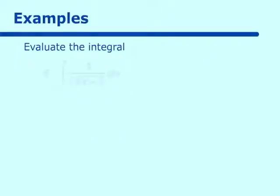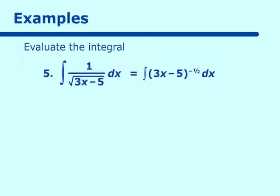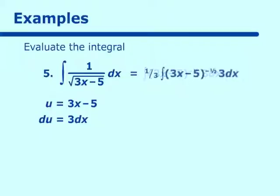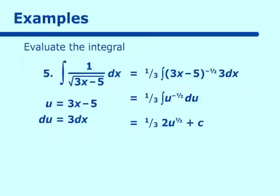Evaluate the integral of 1 over the square root of 3x minus 5 dx. That equals the integral of 3x minus 5 to the negative 1 half dx. Putting it in that form, u is 3x minus 5, which makes du equal to 3 dx. So we have 1 third integral of u to the negative 1 half du. Taking that integral, we get 1 third u to the 1 half times 2 plus c, which simplifies to 2 thirds times the square root of 3x minus 5 plus c.